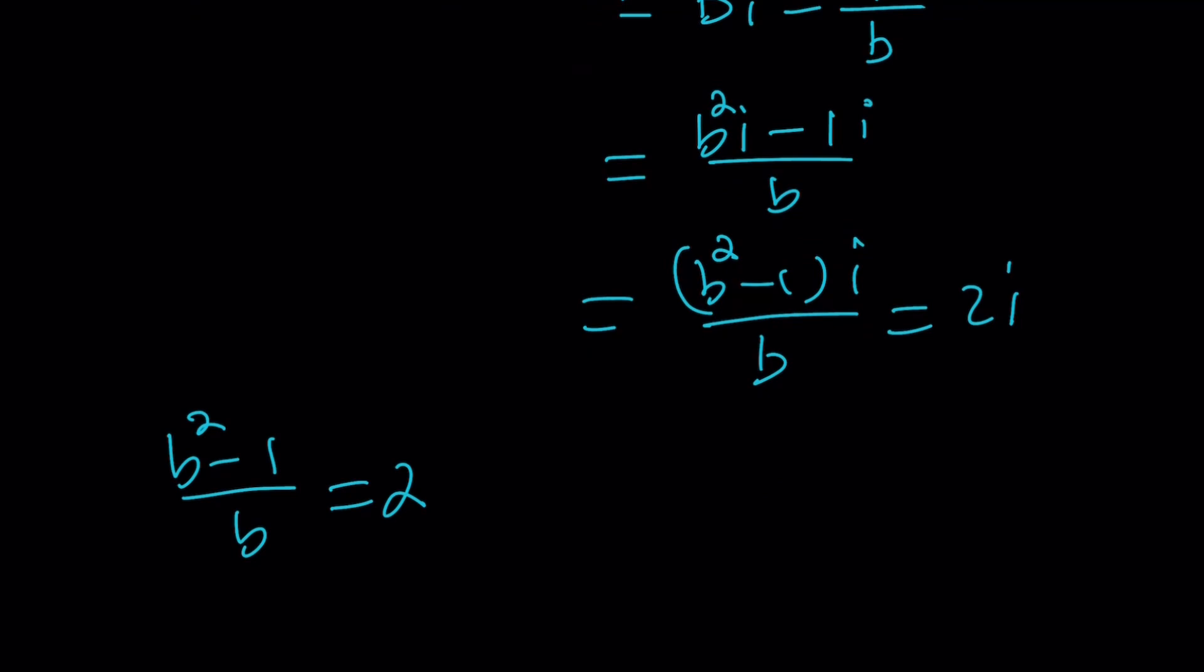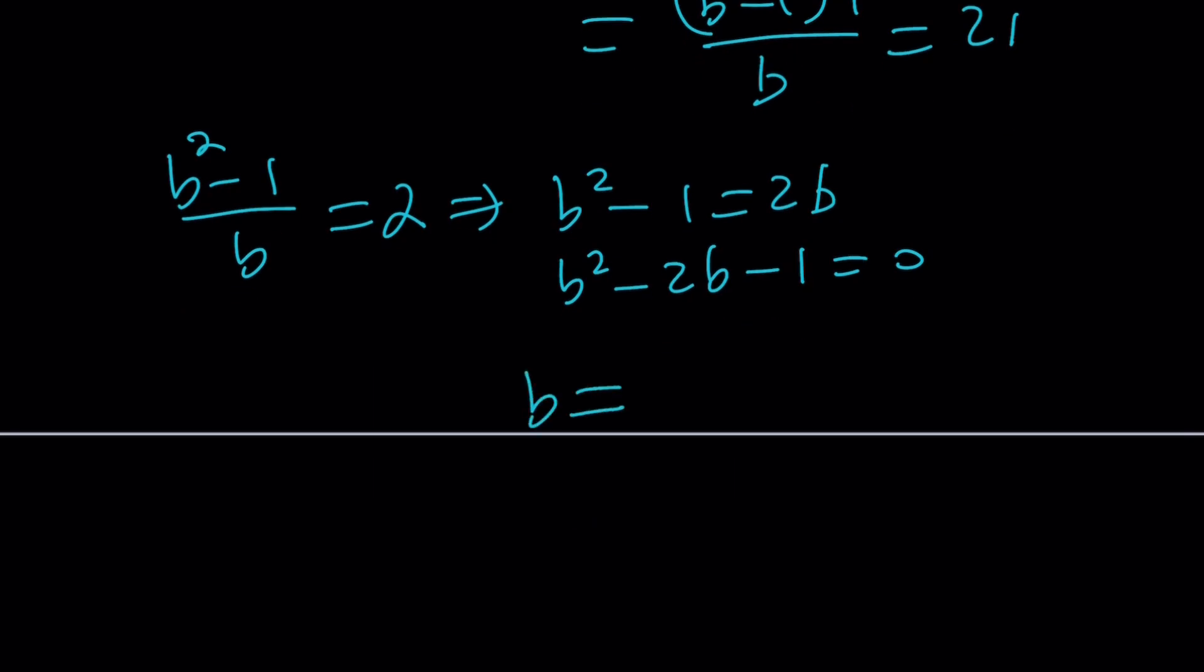Okay, so what ended up happening is we assume it's in this form, and it worked, because now we've got an equation. Obviously, b is a real number, and if you cross-multiply, b squared minus 1 is 2b, or not 2b. Allow me to make that joke. It's been a while. And then you get this equation, and from here, if you solve it using a quadratic formula, you get 1 plus minus root 2. And since we assume that x is bi, x can be written as 1 plus minus root 2 times i. Make sense? Awesome.